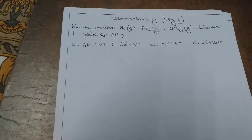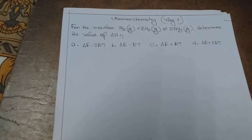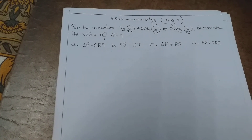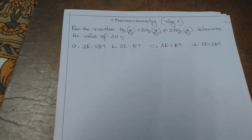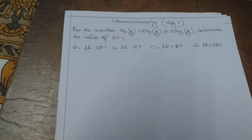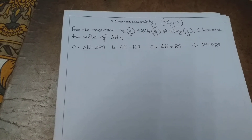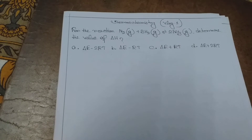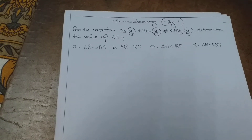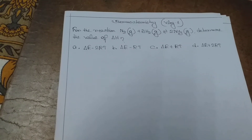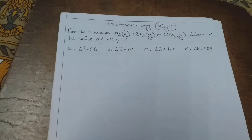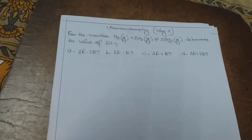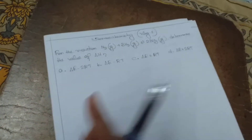Four options are given: option A, delta E minus 2RT; option B, delta E minus RT; option C, delta E plus RT; option D, delta E plus 2RT. At first we should know what is delta E.